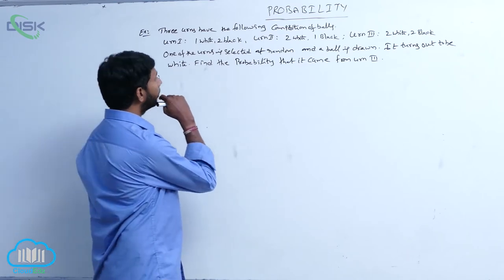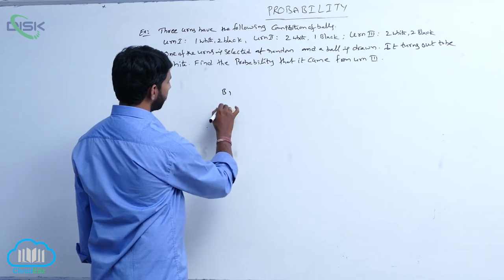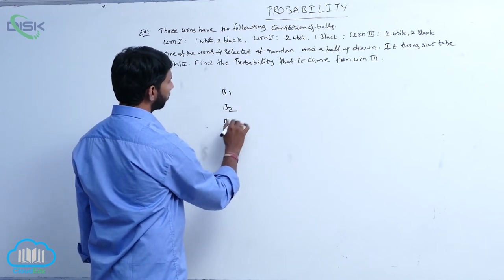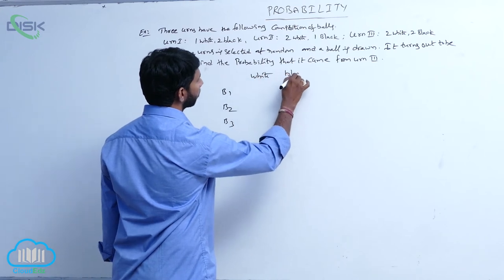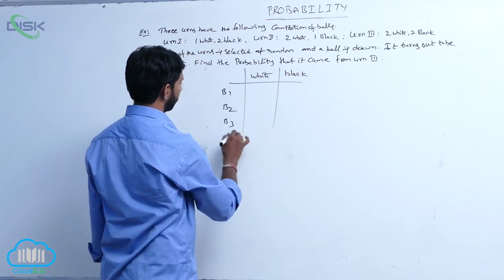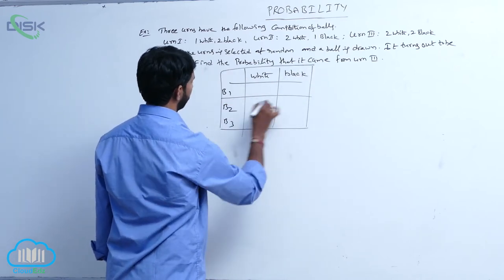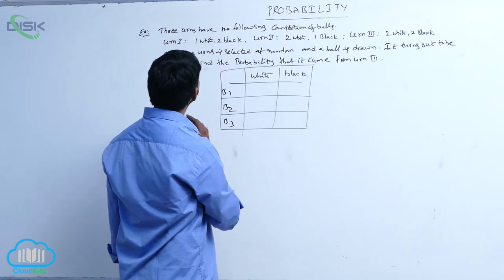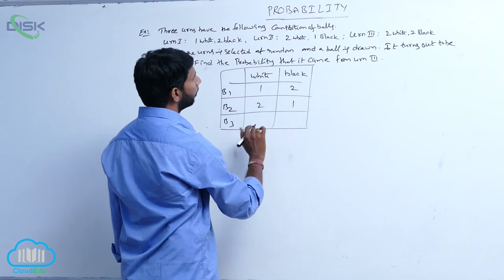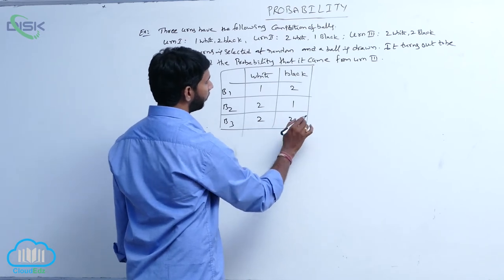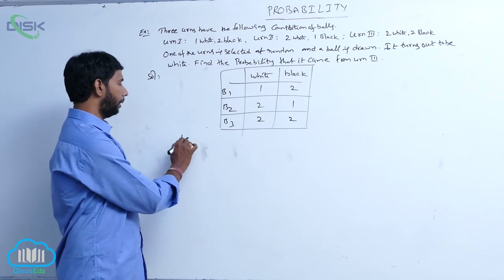Draw the diagram or table for the given bags. The bags are B1, B2, B3, and the balls are white and black balls. The first bag contains one white and two black balls, the second contains two white and one black ball, and the third contains two white and two black balls. Let B1, B2, B3 be the three bags.